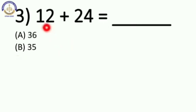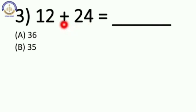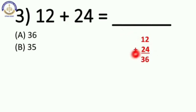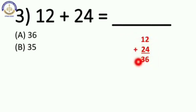Third one is 12 plus 24. Here is simple addition — humein kya karna hai? Addition karna hai. This is the symbol of addition. So 12 plus 24: 2 plus 4 is equal to 6, and 1 plus 2 is equal to 3. Our answer is 36. Option A, 36.